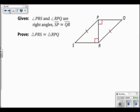Now in this problem, we are given that angle PRS and angle RPQ are right angles, and that's drawn for us. And we're also given that segment SP is congruent to segment QR.